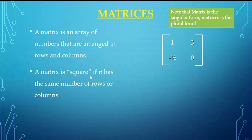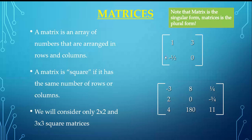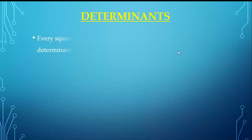A matrix is square if it has the same number of rows and columns. For example, a matrix with two rows and two columns is a square matrix. If rows and columns differ, it is rectangular. A 3×3 matrix has three rows and three columns. The order of a matrix is defined as rows by columns — so two-by-two or three-by-three.